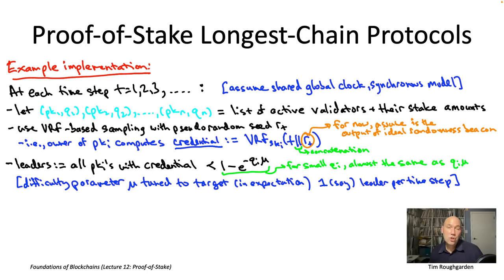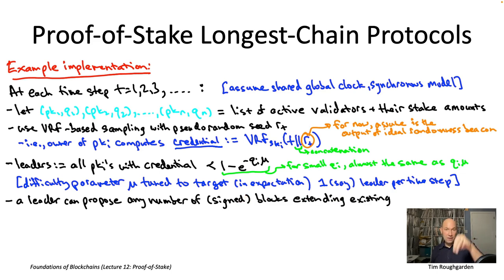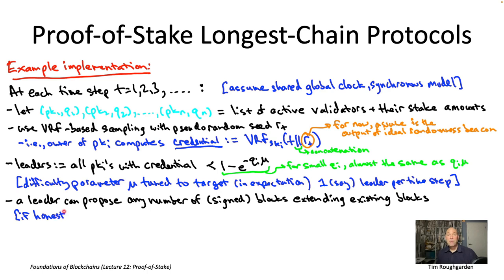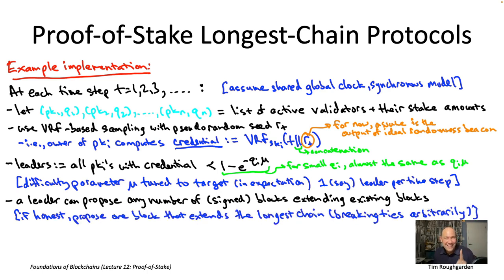Now that we know how leaders are chosen, the idea is just to pretend we're running permissioned longest chain consensus. A leader — someone with a sufficiently small credential — is allowed to make a block proposal. In longest chain consensus, when you make a block proposal, you specify not just the transactions but also get to freely specify the preceding block — which part of the existing blockchain you want your new block to extend. If you remember from the permissioned version discussed in lecture eight, a leader can even propose as many blocks as it wants, potentially different blocks extending different parts of the current blockchain.